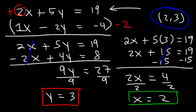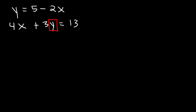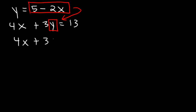Now let's talk about how to solve a system of two equations using substitution. The first equation is y equals 5 minus 2x, and the second is 4x plus 3y equals 13. We want to replace — or substitute — y in the second equation with 5 minus 2x, since y equals 5 minus 2x. So we get 4x plus 3 times (5 minus 2x) equals 13.